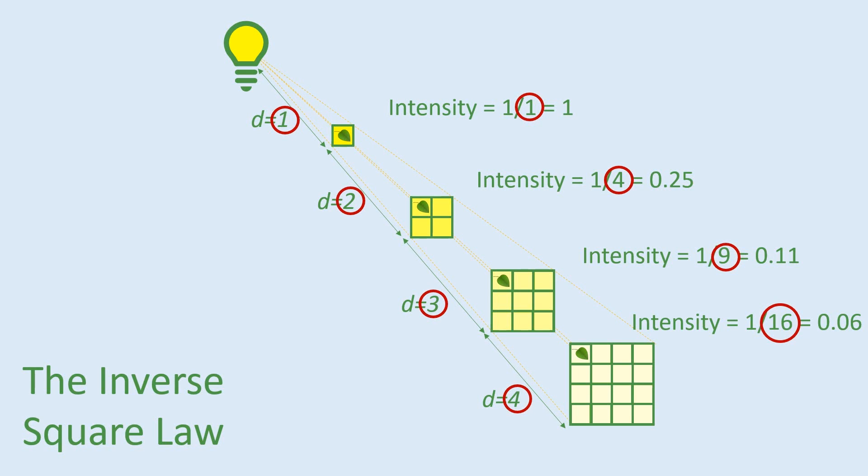To work out the intensity of light at each of the different distances, we can use the general equation one over x squared. You can see that this calculation is the inverse, one over, of the square of x, one over x squared. And this is where the name, the inverse square law comes from.